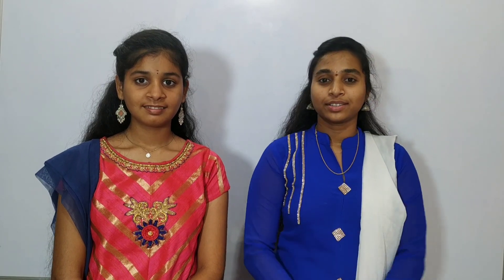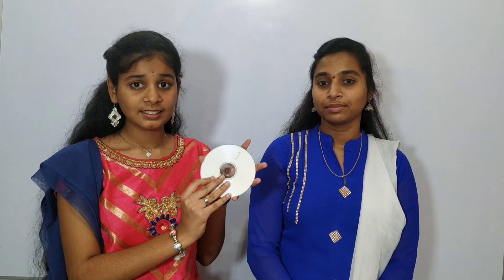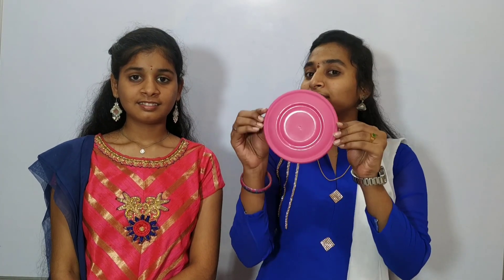Now let us get into the topic shapes. This is a CD which is in circular shape. This is a plate which is in circular shape. This is a ball which is in circular shape.